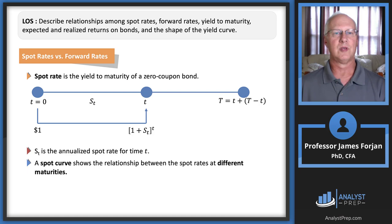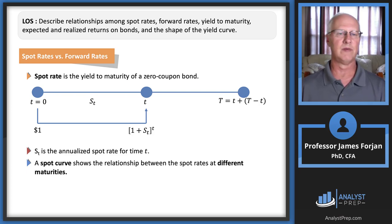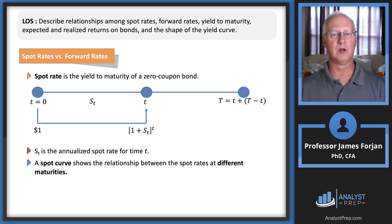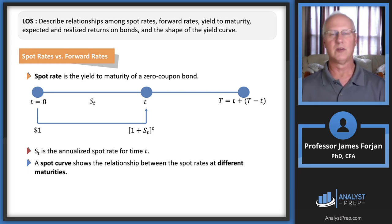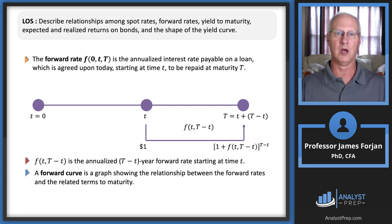Let's begin with that first LOS: spot rates. This is the yield to maturity of a zero coupon bond. If we have a dollar at time period zero and we want to know what it's worth at time period t, all we need to do is multiply that one dollar times one plus the spot rate raised to that time period t. A spot curve shows the relationship between spot rates at different maturities — there's a one-year spot rate, a two-year spot rate, a twelve-year spot rate, and so on. There are even bonds issued with thousand-year maturities.